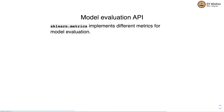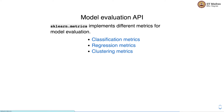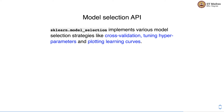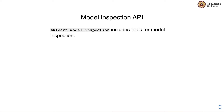The model evaluation API implements different metrics for model evaluation — metrics for classification, regression, and clustering are all available in the sklearn library. The model selection API implements various model selection strategies like cross-validation, hyperparameter tuning, and plotting learning curves. The model inspection API provides tools for figuring out the weights learned by the model, giving an intuitive understanding of what the model has learned.